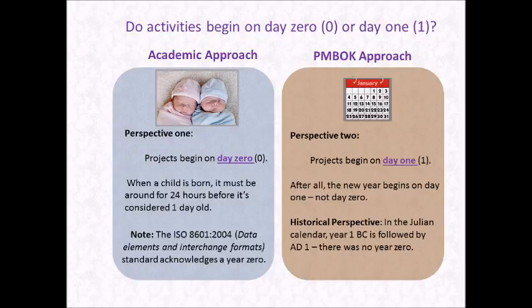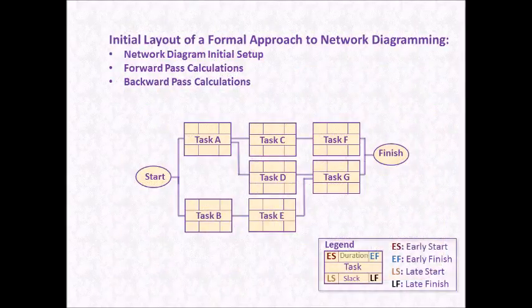Intrinsically, this is consistent with how we think of days. For example, when a child is born, they must be in the world 24 hours before we think of them as being one day old. This means that their life began on day 0, not day 1. It should also be pointed out that many standards, such as ISO 8601, also specify that things begin on day 0. The second approach, which I will refer to as the PMBOK approach, specifies that projects begin on day 1. This is consistent with our ideas of how a calendar works. For example, January 1 of a new year is thought of as day 1, not day 0. This is the network diagram that I will be completing as part of this video tutorial.